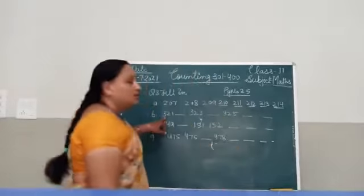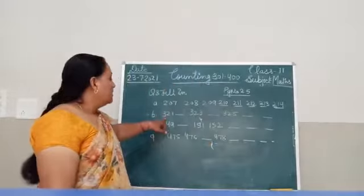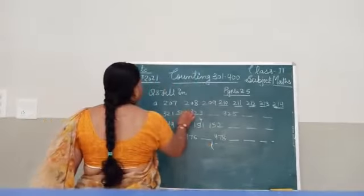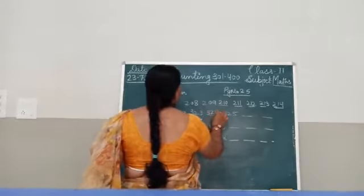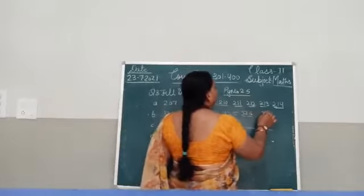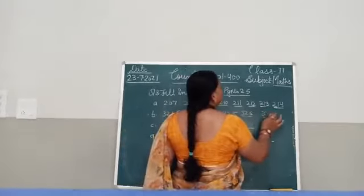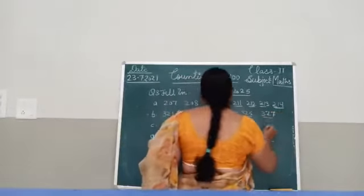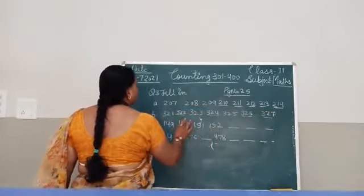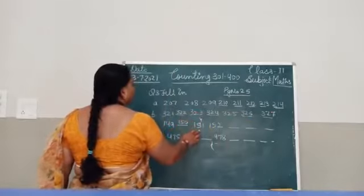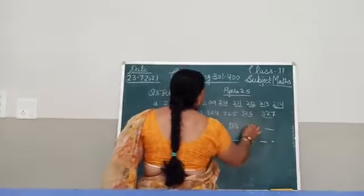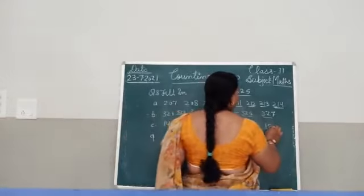Now it is a series of 320: 321, 322, 323, 324, 325, 326, 327. Then 149, 150, 151, 152, 153, 154, 155.